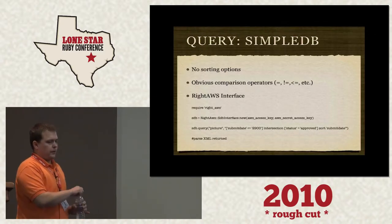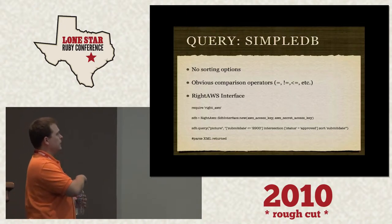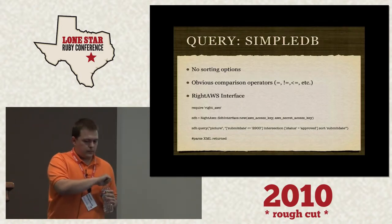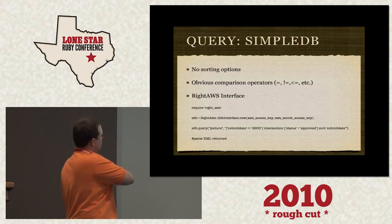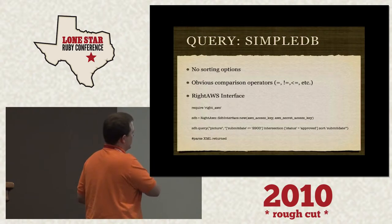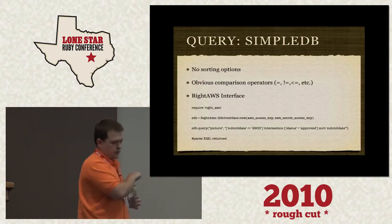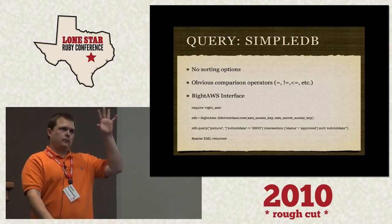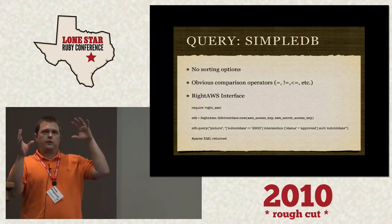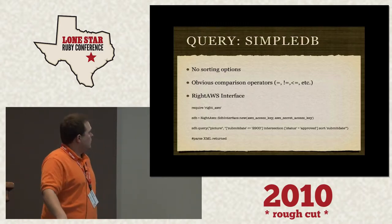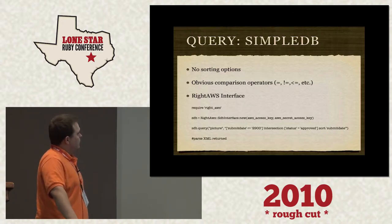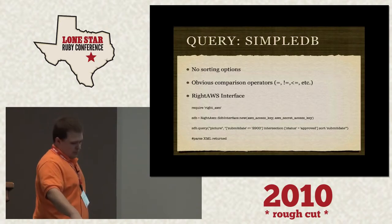SimpleDB querying: there's no sorting, which I think is a little bit lame. You can do things like equal, not equal, less than, greater than, equal to. Using the right Amazon Web Services gem, you do querying based on intersections of attributes — looking for documents where attributes intersect. The downside is that it returns XML and you have to parse it, with a maximum of five seconds before it will likely time out.